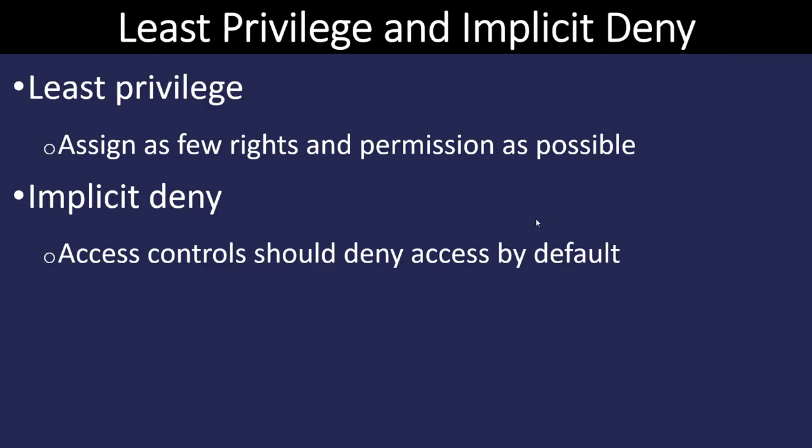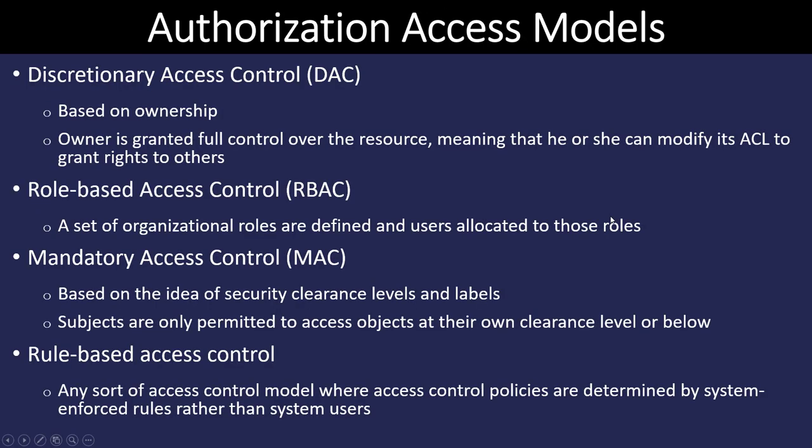The idea of least privilege is a very important concept in security. We're trying to make sure that each user has exactly the rights and permissions they need to perform their job — we don't want to give them any more because that becomes a vulnerability or a risk. The other idea is implicit deny, which means that by default you don't have access to anything and the IT department has to give you permission to use anything on the network. So we have to have a plan for how we're going to grant access.